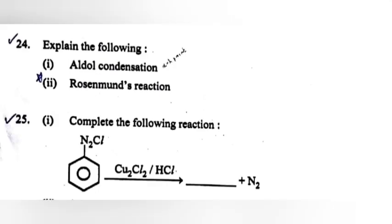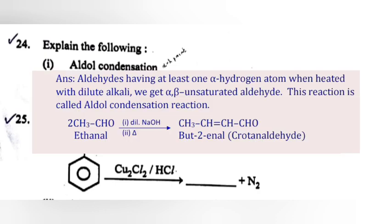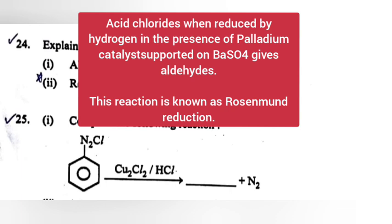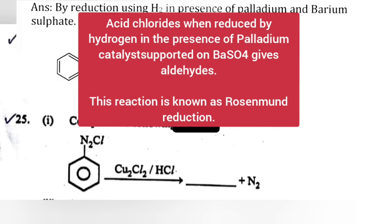Question 24: Explain the following. Part 1: Aldol condensation. Answer: An aldehyde having at least one alpha-hydrogen atom, when treated with dilute alkali, gives an alpha-beta unsaturated aldehyde. This reaction is called aldol condensation reaction. Part 2: Rosenmund's reaction. Answer: Acid chloride when reduced by hydrogen in the presence of palladium catalyst supported on BaSO4 gives aldehydes. This reaction is known as Rosenmund's reaction.